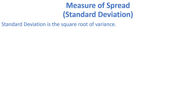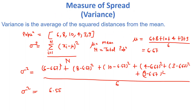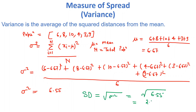Going back to the previous example, if we talk about the standard deviation, it will be the square root of the variance. So the square root of 6.55 is approximately 2.55. So the standard deviation is 2.55.